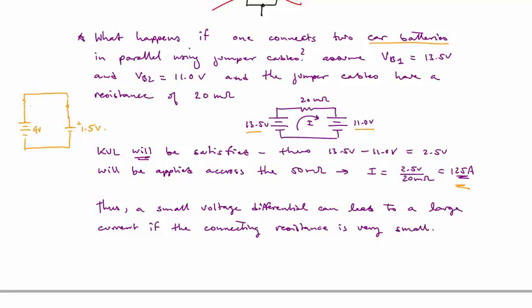When you connect these together, you are closing a loop, but you're not connecting an ideal 9 volt battery to an ideal 1 and a half volt battery. They're being connected through their internal resistances.